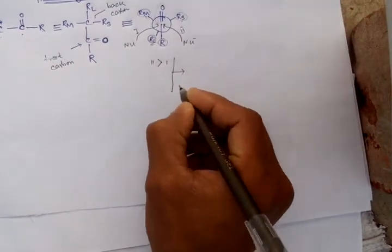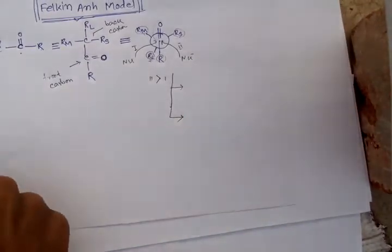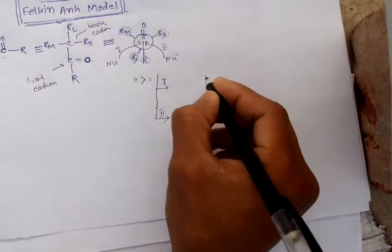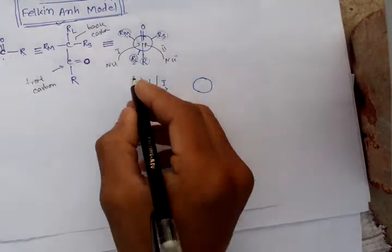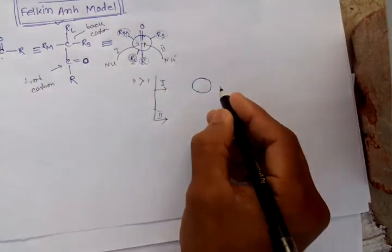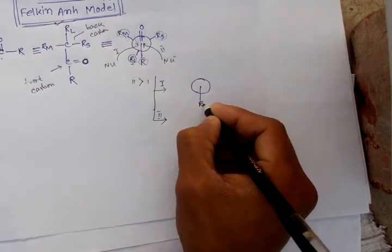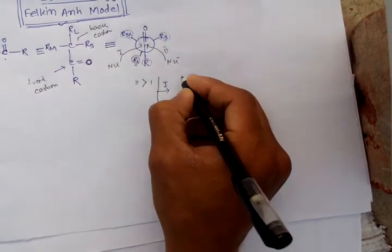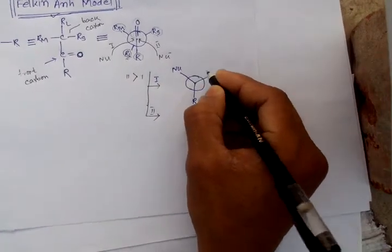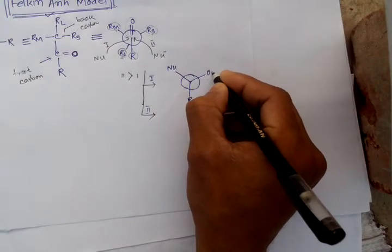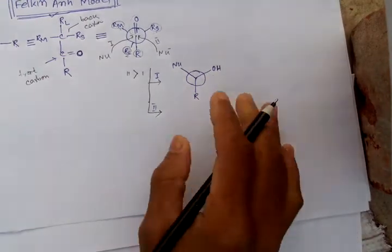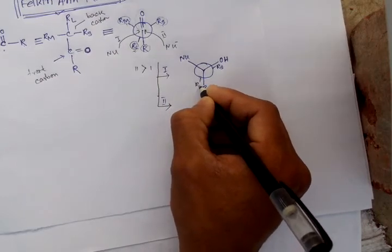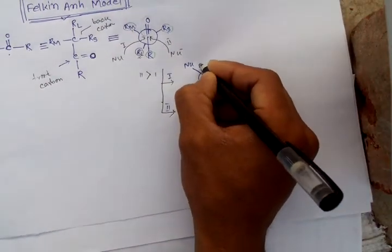The product will form from path one and the product from path two. If the nucleophile attacks from path two side, the alkyl group remains the same and the nucleophile attacks this side — the nucleophile comes here and the carbonyl carbon oxygen goes here, remaining as the medium group.